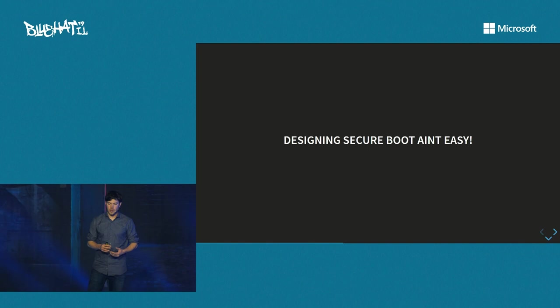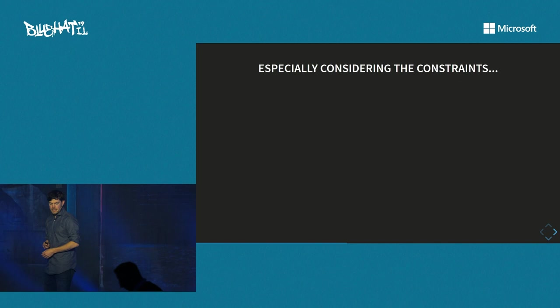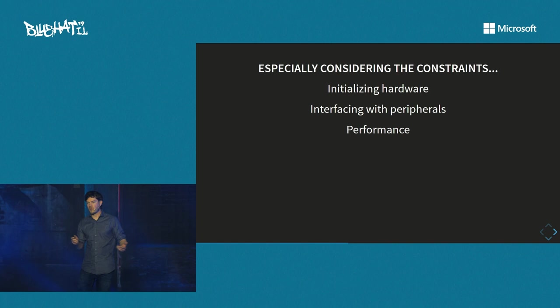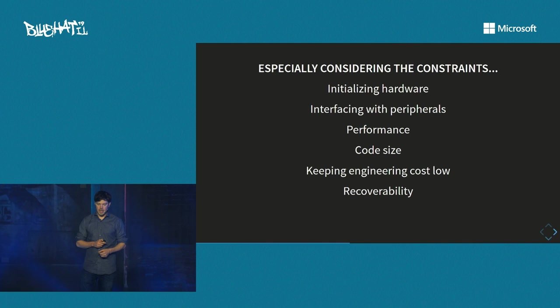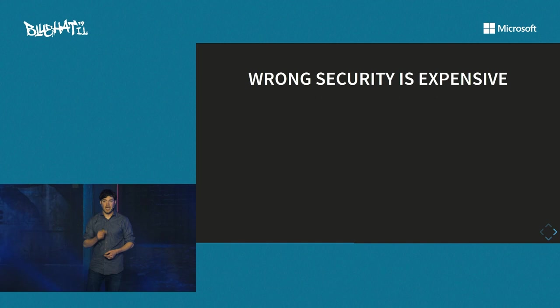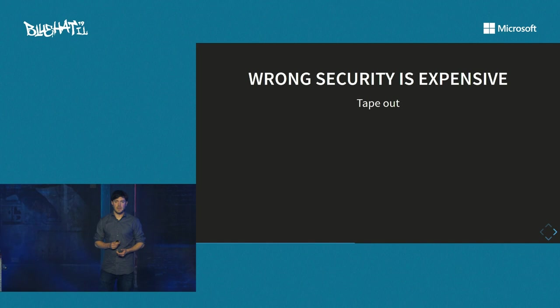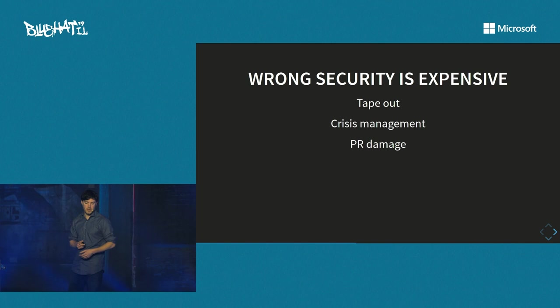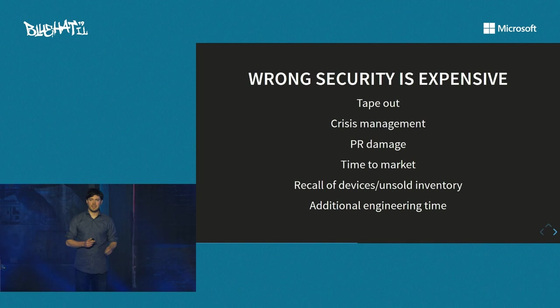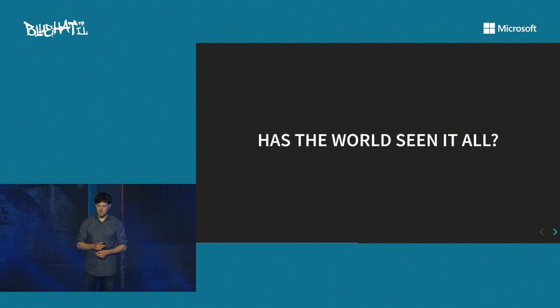Designing secure boot is not simple or easy, but we also have to take into account other constraints: we need to initialize hardware, be aware of performance constraints, keep engineering costs low, recover devices in the field, and sometimes customers have extra requests. However, it is very important to get it right, because bad security can be very expensive. If you need another tape-out, that can cost upwards of a million dollars — before you factor in bad publicity, unsold inventory, inventory you'll have to sell for a lower price, or the additional engineering time required.